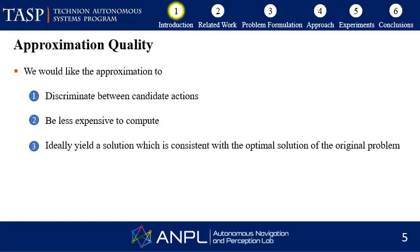However, if we would like to use such an approximation to solve belief space planning problems, it should hold some basic properties. One, it should be able to discriminate between candidate actions such that we could rank them somehow. Two, it should obviously be less expensive to compute, otherwise we could just solve the original problem. And three, it should ideally give us a solution which is consistent with the optimal solution of the original problem.